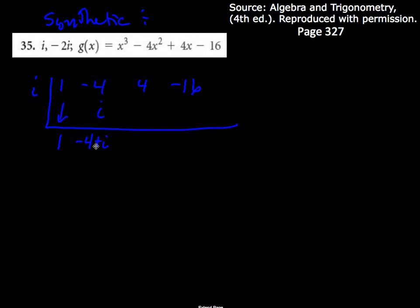Okay, so now let's multiply it. This one times this one. i times minus 4 plus i. So, i times minus 4 is minus 4i. i times i is i squared. And i squared is the same thing as negative 1, right? Okay, so this is what I write up here. Minus 4i minus 1.